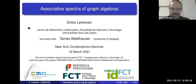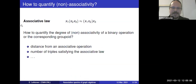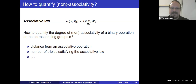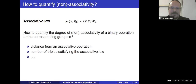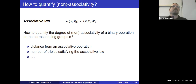The topic of my talk is associative spectra of graph algebras. I should start by explaining what the words in the title mean. First, associativity: a binary operation is called associative if it satisfies the associative law. A binary operation may or may not be associative. There have been many proposals for a finer classification of operations, finer than just associative or non-associative. By a groupoid I mean an algebra with a single binary operation.